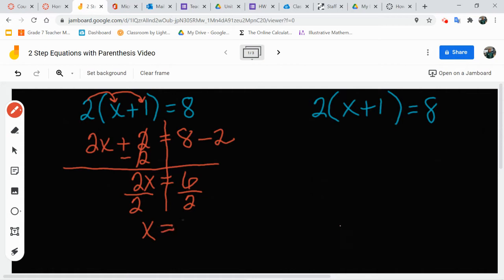Then, to verify that that's the correct answer, we can put it back where the x is. Okay? 2 times 3 plus 1 equals 8. Remember, we do what's inside the parentheses first. 3 plus 1 is 4. 2 times 4 is equal to 8. So x equals 3 is the correct answer.